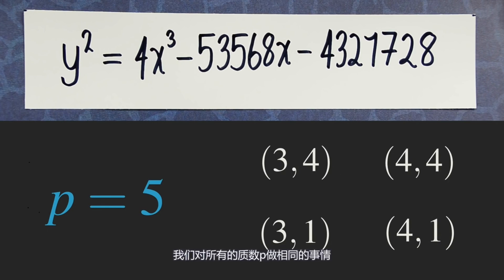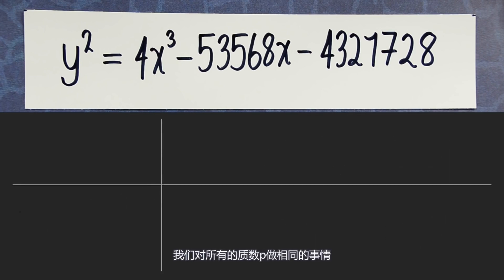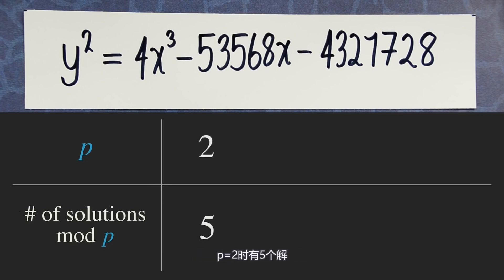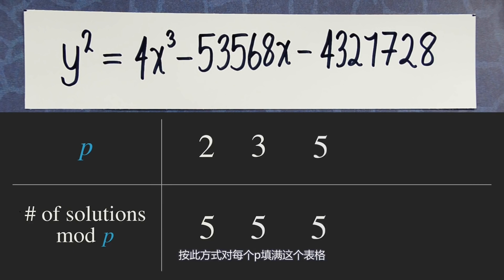We can do this for every prime number p — for every prime p, we can count the number of solutions to this equation mod p. For p equals 2, there are 5 solutions. For p equals 3, there are 5 solutions. Likewise, you can fill this out for all primes p.